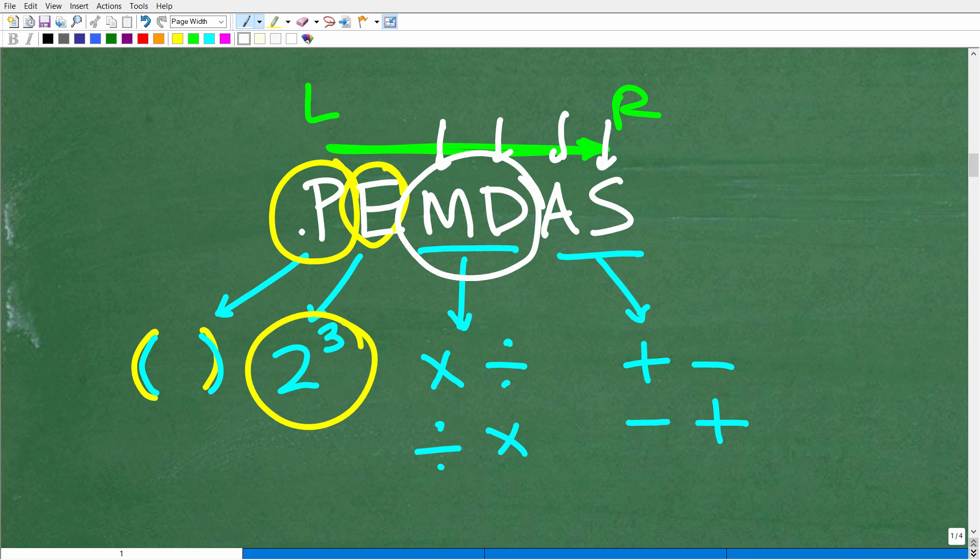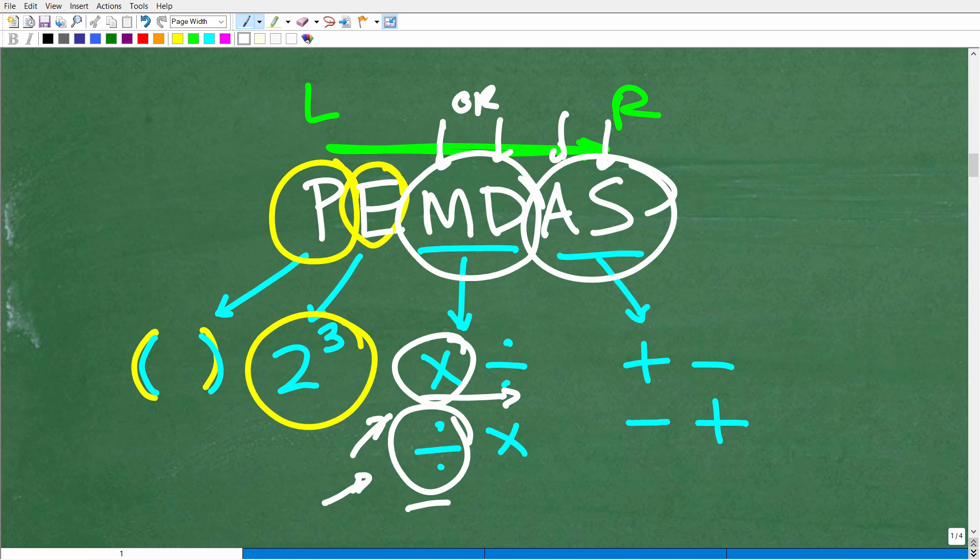Okay. So, we have P, parentheses, and then E, exponents, powers. The next thing on our checklist is multiplication or division. So, if we have multiplication or division, what we're going to do is whatever we see first from left to right. So, if we have multiplication and then division, we're going to do multiplication first. But if we have division, then multiplication, we're going to do division first. So, if we have a problem where you have both multiplication and division, you need to basically ask yourself, hey, what do I see first from left to right? And that is what you're going to do. And addition and subtraction work the same way. It's whatever you see first from left to right.